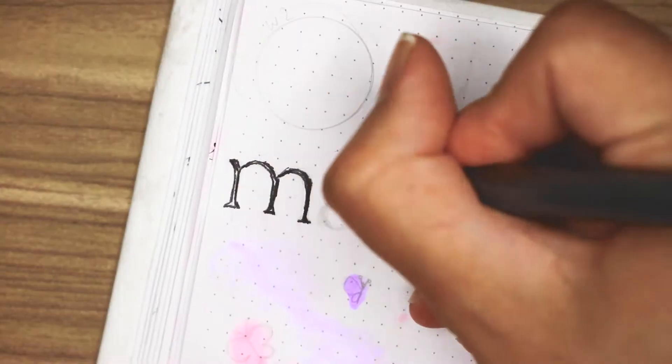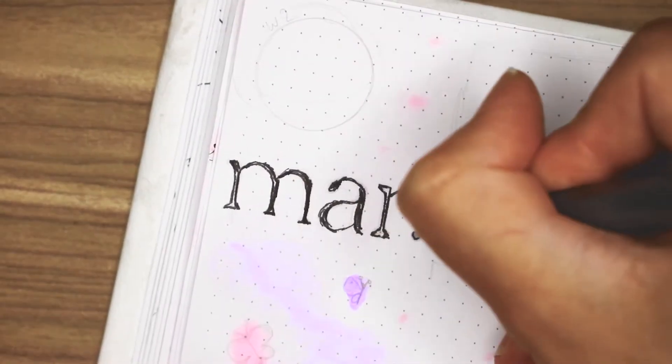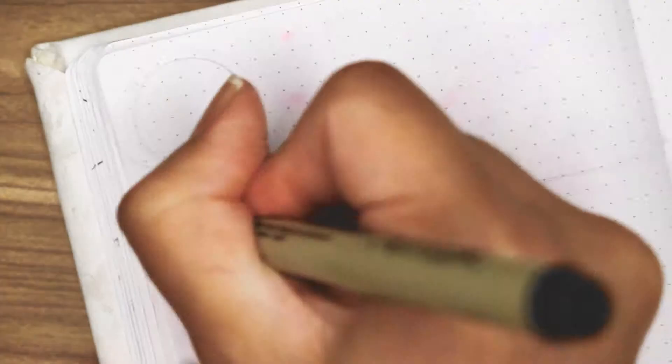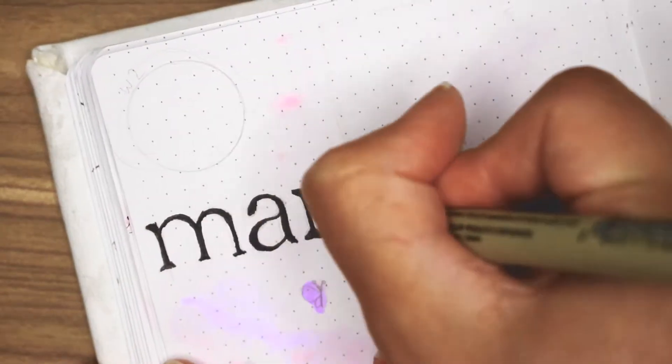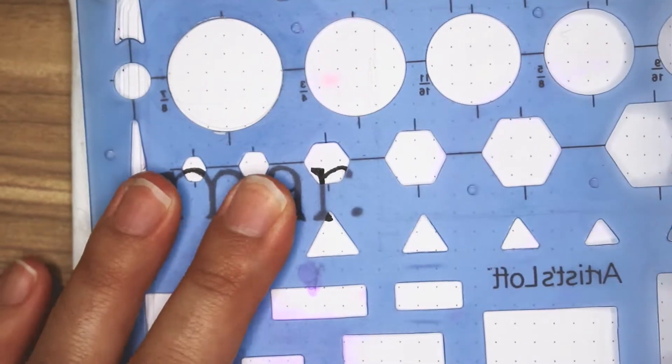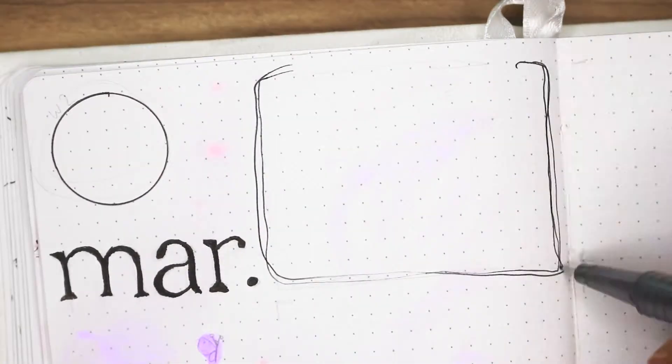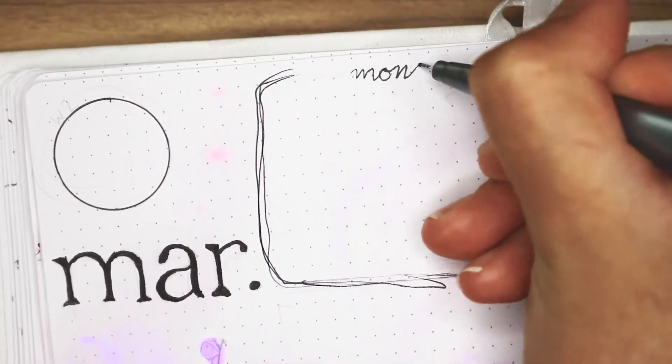As usual, I wrote the month name onto the side with big bold Giorgio letters - I think that's the font name. Then I went ahead and did the box of the week in the middle of the pages. I only did six so there's just a weekend box, which is fine by me.